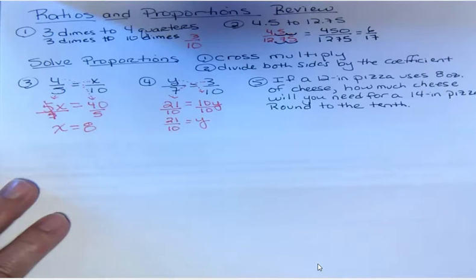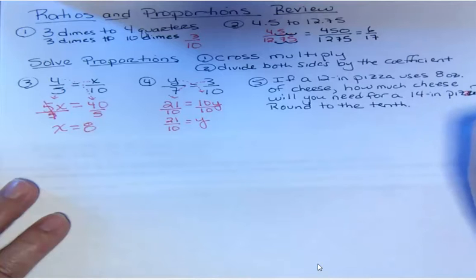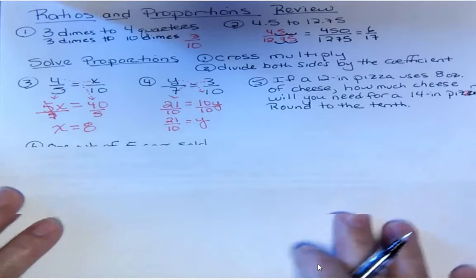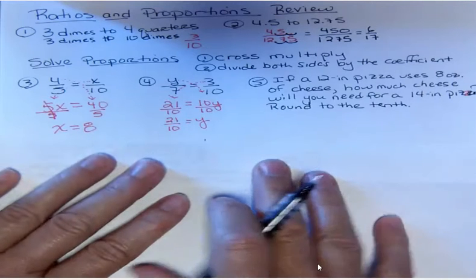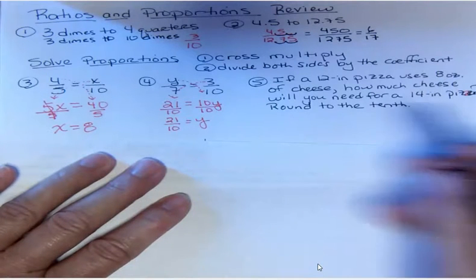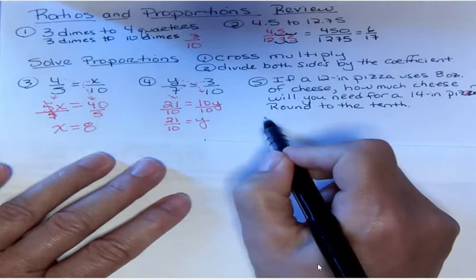One of my letters came off the page here but you know that says pizza at the end. Let's read through this. If a 12-inch pizza uses 8 ounces of cheese, how much cheese will you need for a 14-inch pizza? Round your answer to the tenth. So let's see what we can do here. What I suggest that you do is off to the side write the two things that you're comparing. You're comparing the pizza size to the ounces of cheese.